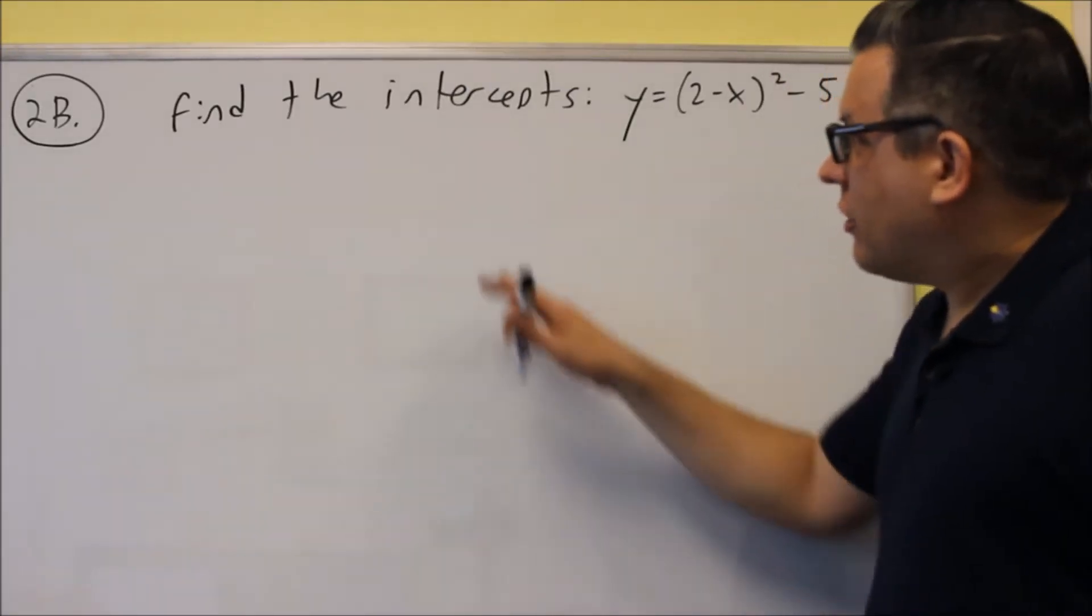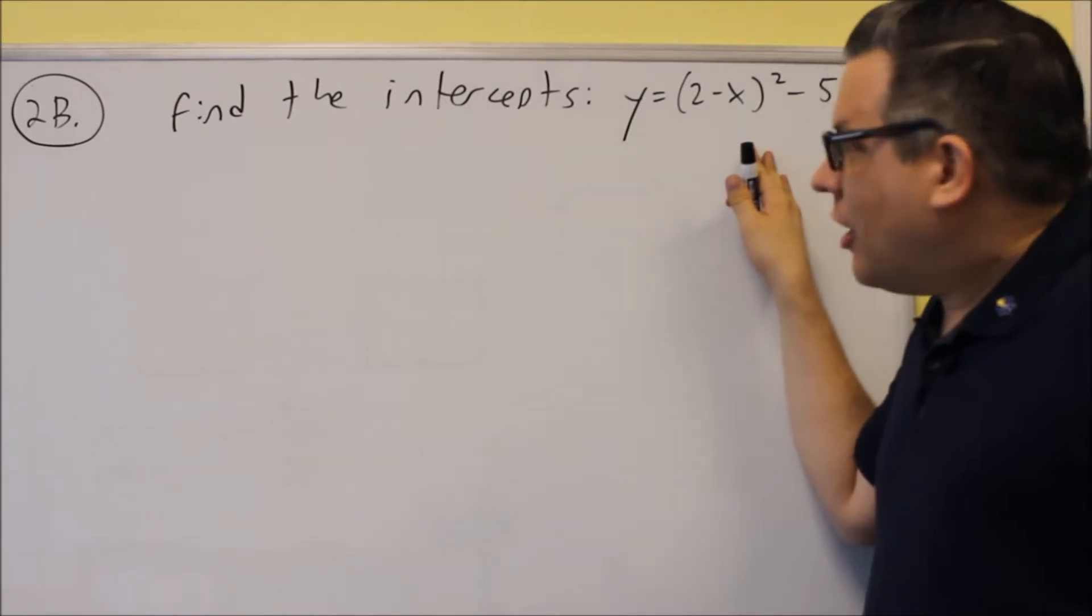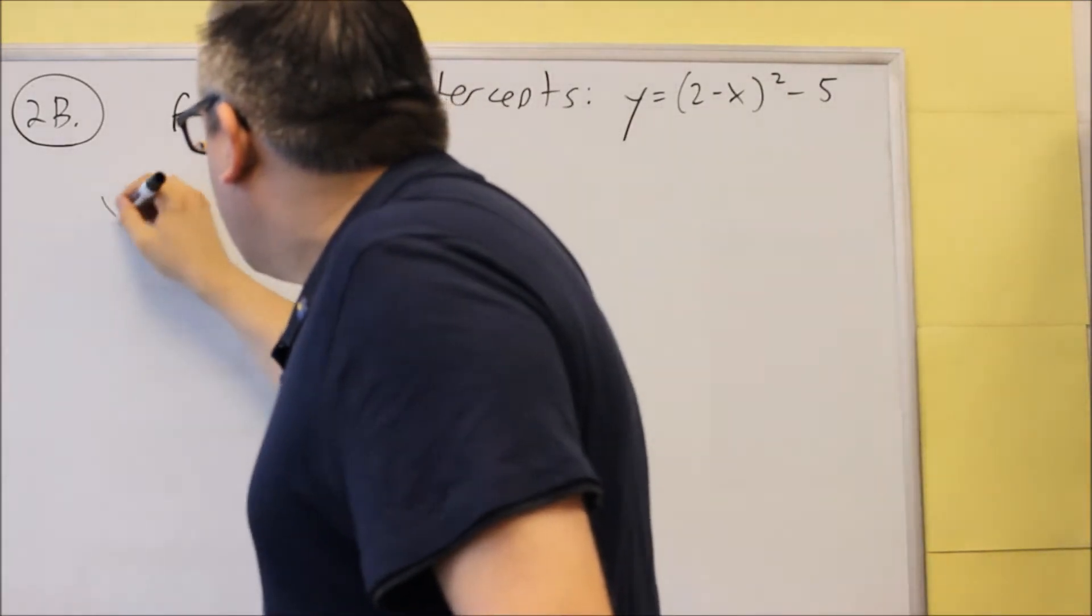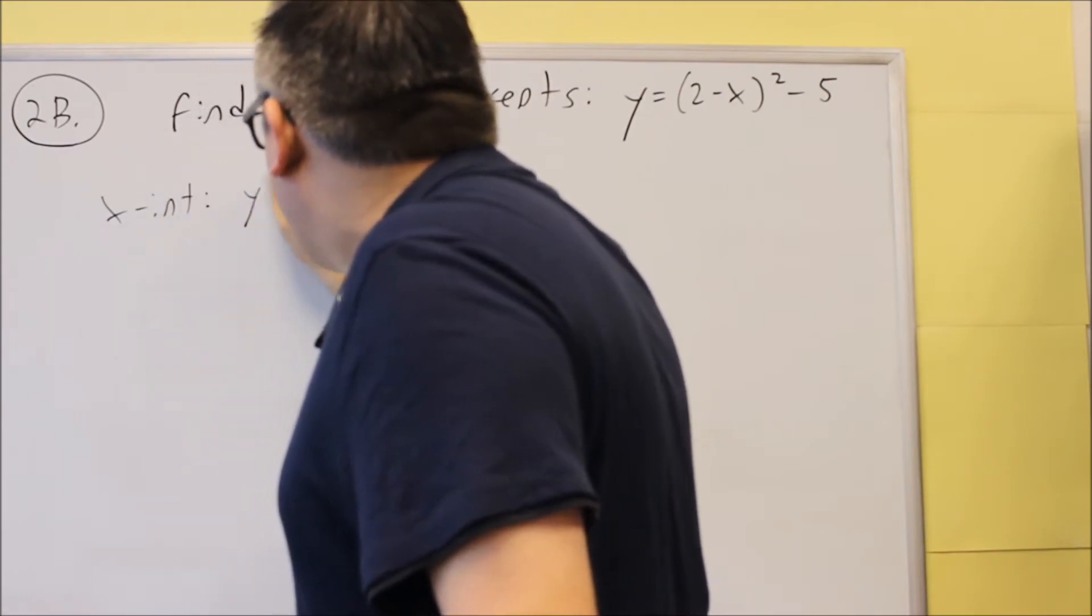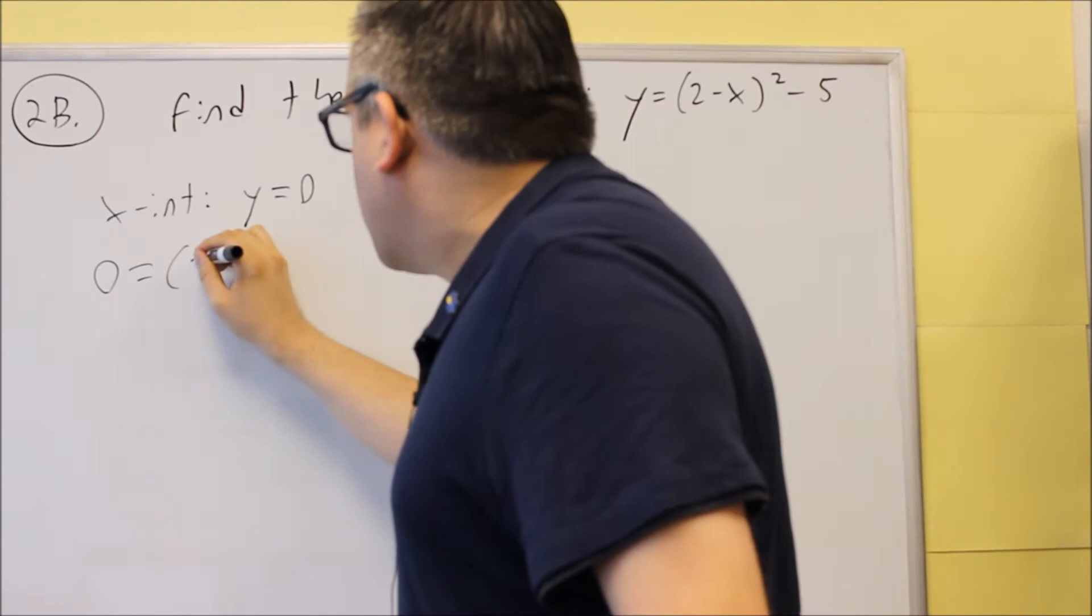Okay, for 2b, we notice that there is a different type of equation here. We are going to still do the same process. If I want to find the x-intercept, we'll start with that first. I'm still going to put in a 0 for y. So I have 0 equals this.